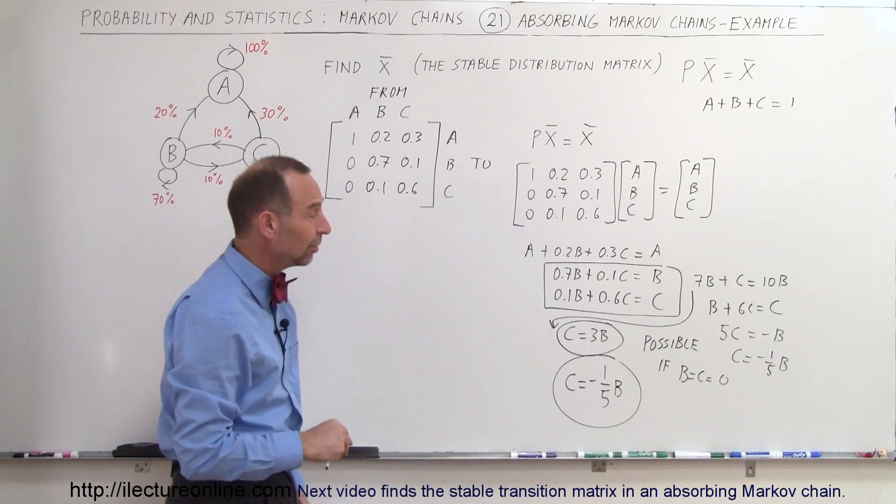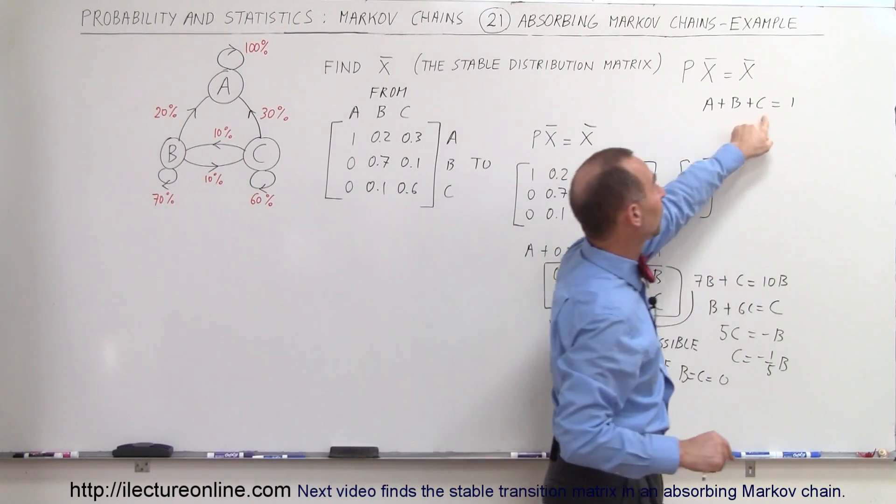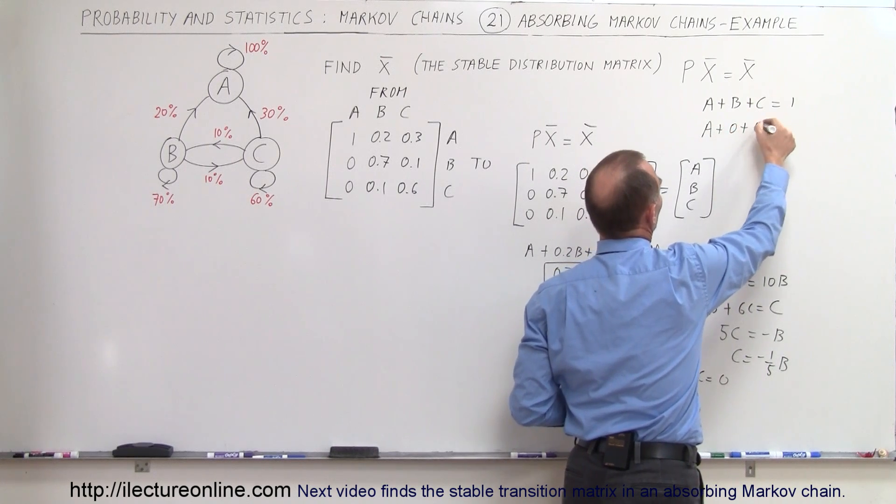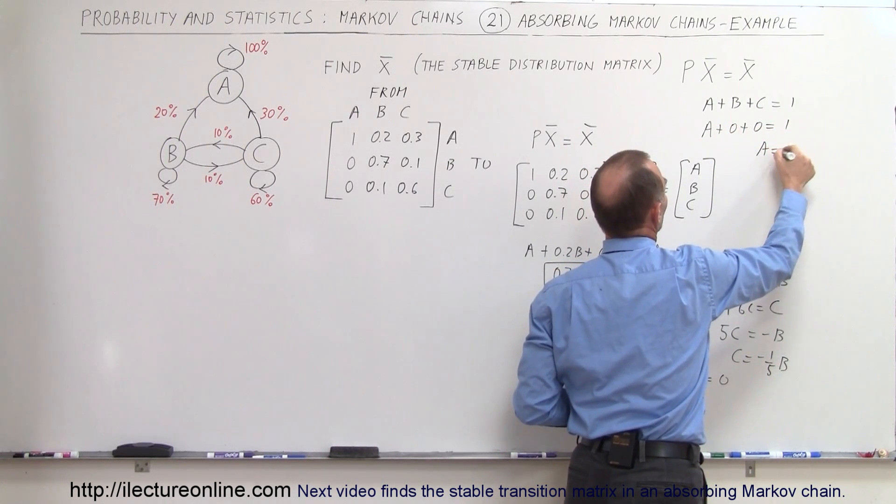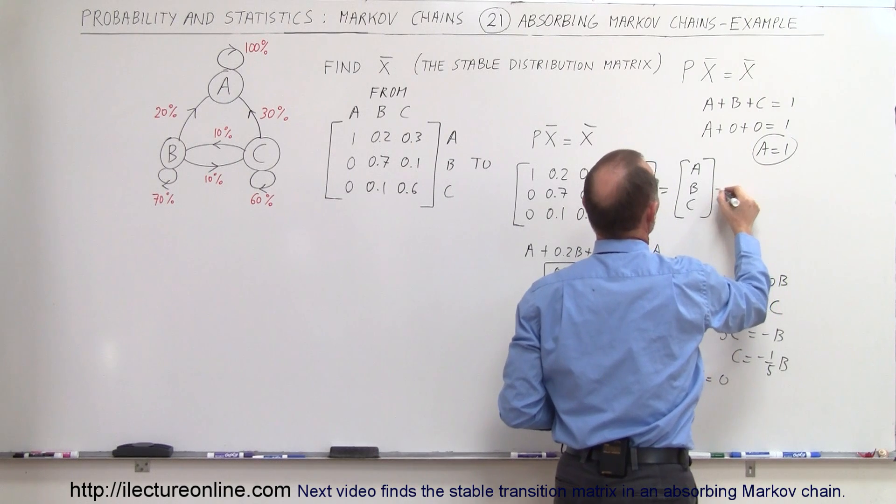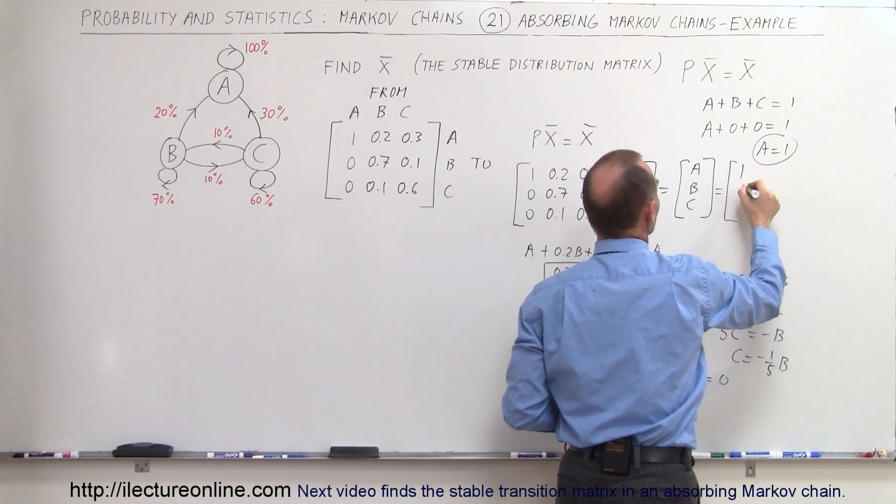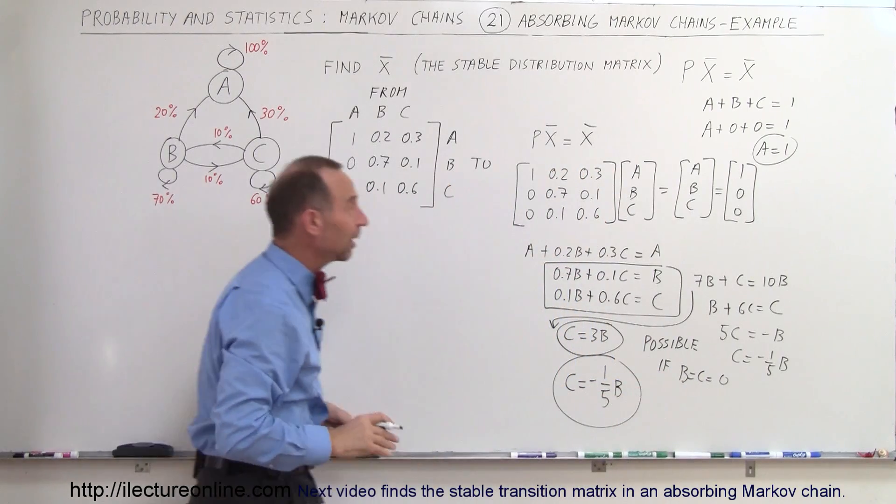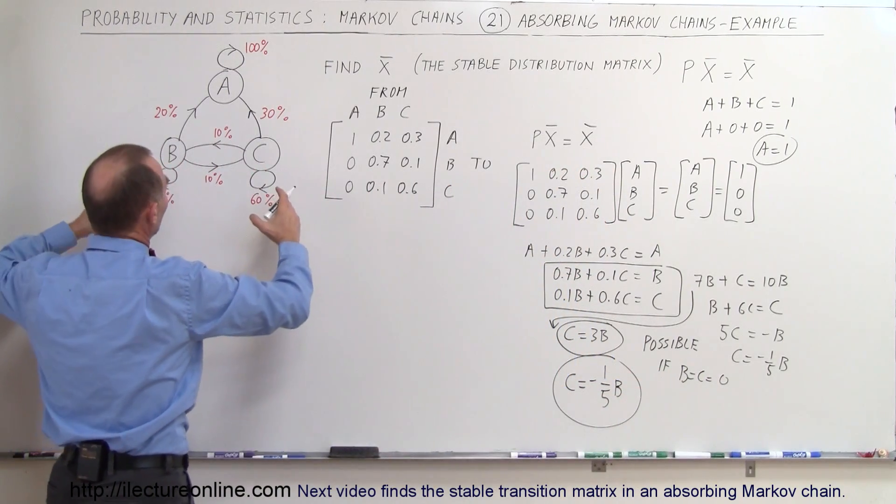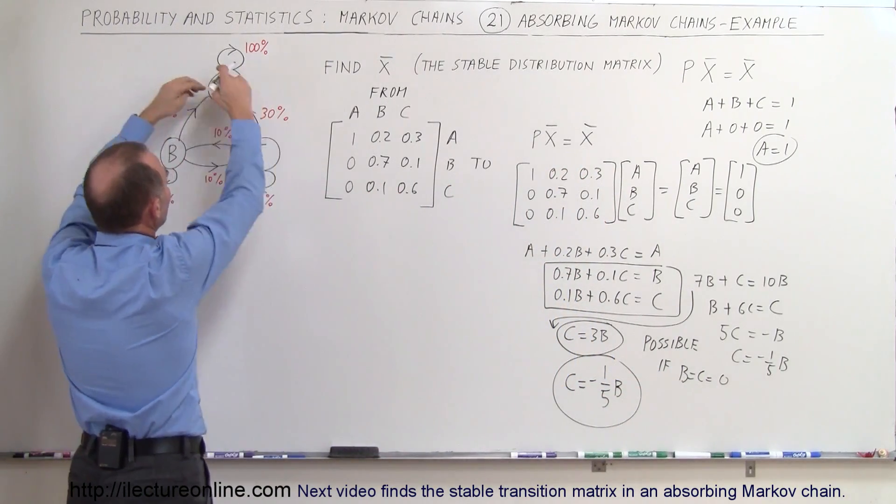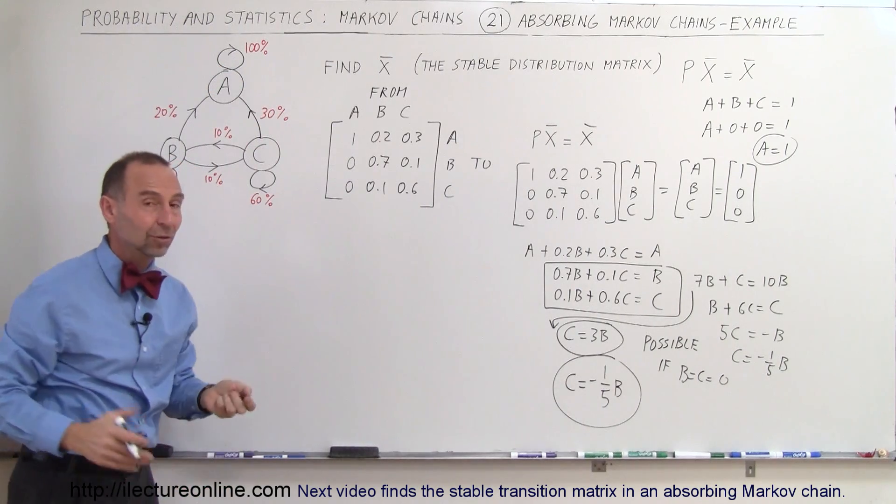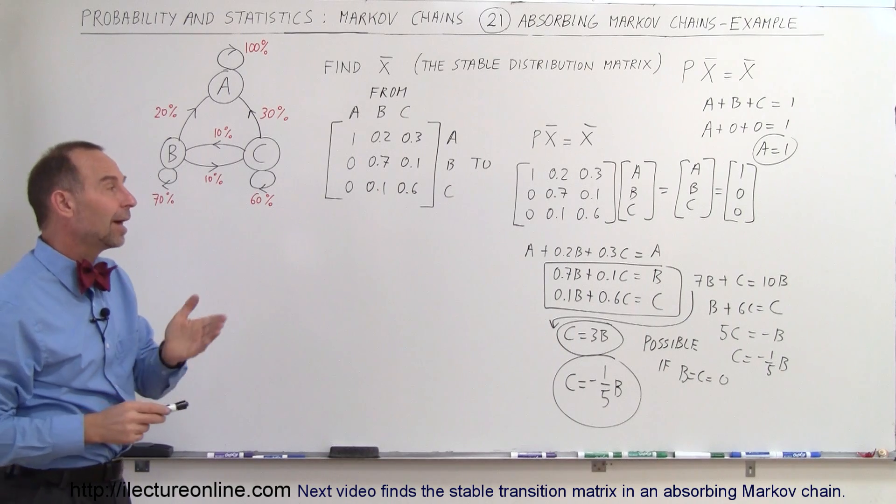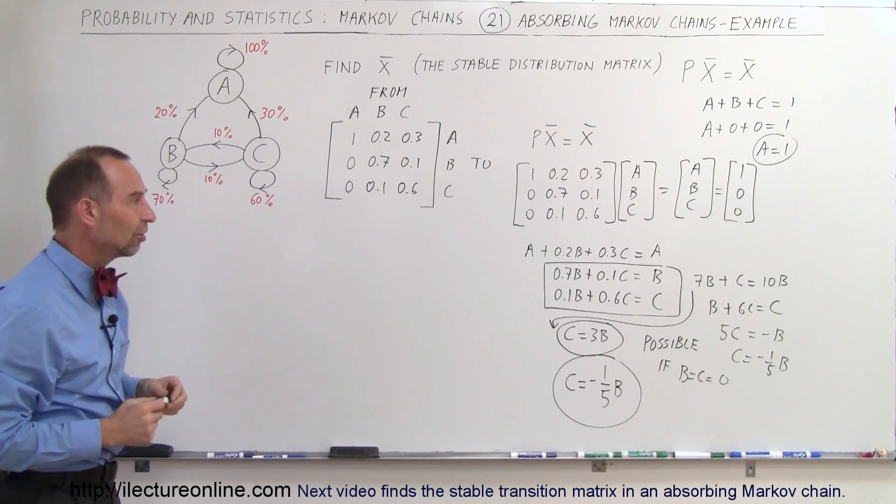So if B and C are equal to 0, and since we know that A plus B plus C equals 1, I can then say that A plus 0 plus 0 equals 1, or A equals 1. Which means our stable distribution matrix will be [1, 0, 0], which is what we had expected in the first place, because we know that customers will always end up drifting towards A and never coming back to B and C. So over time all customers will end up at A, and 0 customers will end up at B and C with this transition matrix.